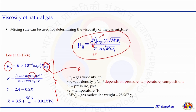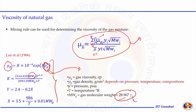If we know gamma G, we can calculate the apparent molecular weight Mwg as 28.97 times gamma G, and put it into the Lee et al. expression to get viscosity. Remember, the numerical coefficients depend on the unit system chosen. Using Lee et al., we can get the viscosity of natural gas in centipoise, with rho_g in grams per cubic centimeter, pressure in psi, and temperature in degrees Rankine.